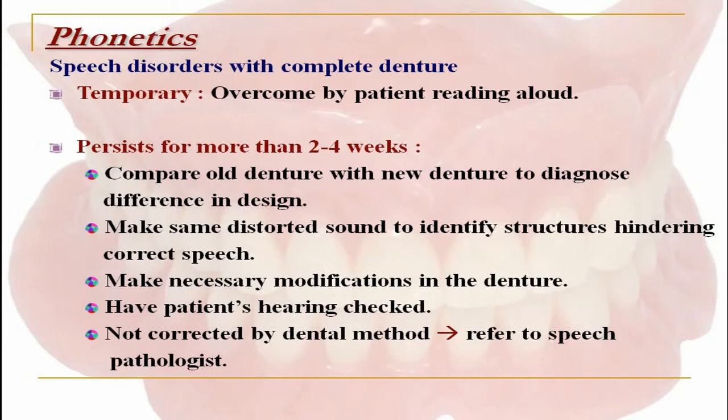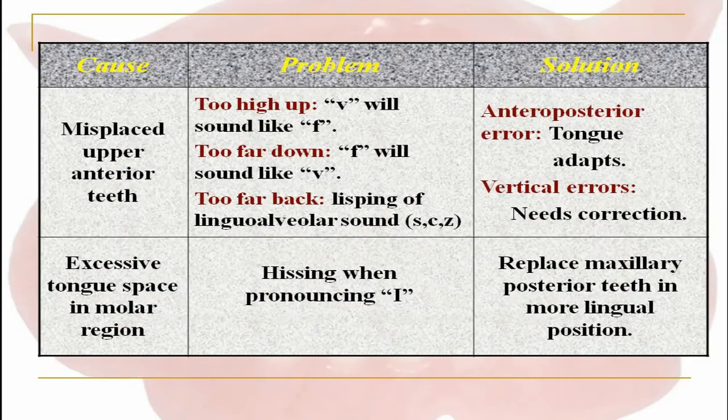It is advised to compare the old denture with the new denture to diagnose the difference in design. Ask the patient to make the distorted sounds to identify the structures hindering correct speech, then make necessary corrections. If the dentist feels it is right, get the patient's hearing checked. If the complaint cannot be corrected by dental methods, we can refer the patient to a speech pathologist.